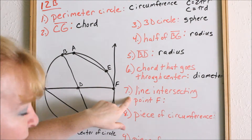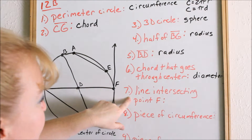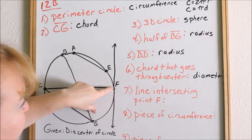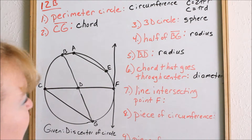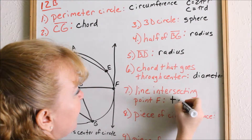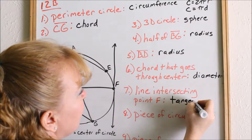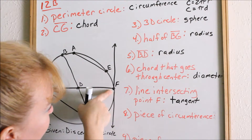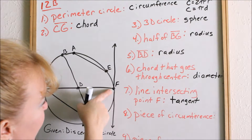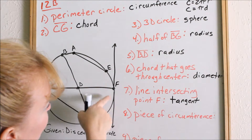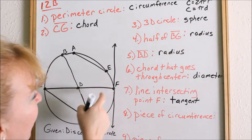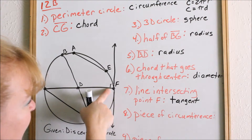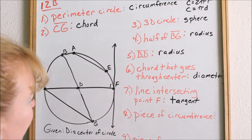Now we're looking at a line intersecting point F. What do we call the line that intersects at point F? This line that intersects at point F is a tangent. By definition, a tangent is a line that intersects a circle at only one point — which is point F. The other thing to know about a tangent is that a tangent is perpendicular to the radius. Any tangent of a circle will always be perpendicular with your radius.